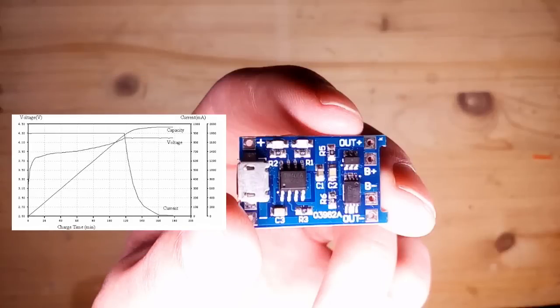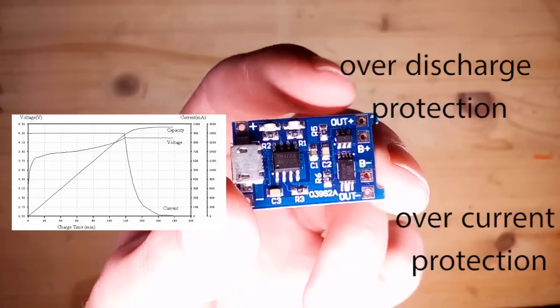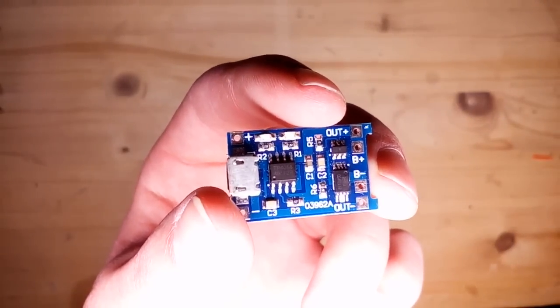On its output the board features an over discharge and over current protection. Most modern phone batteries have one already installed, but this way you can also use unprotected lithium cells like you would find them in old laptop batteries.